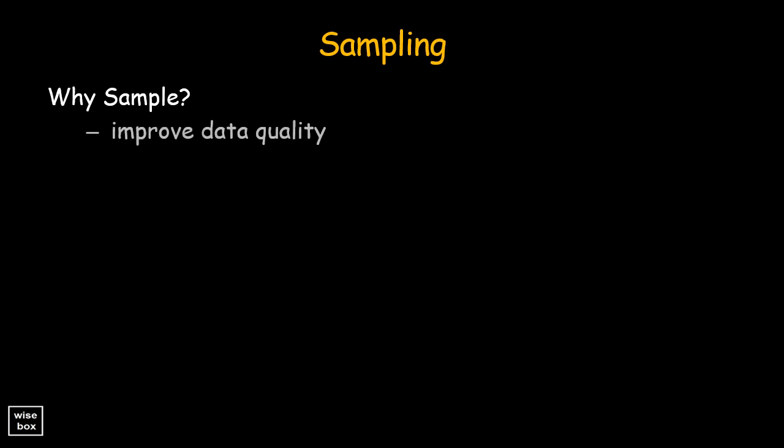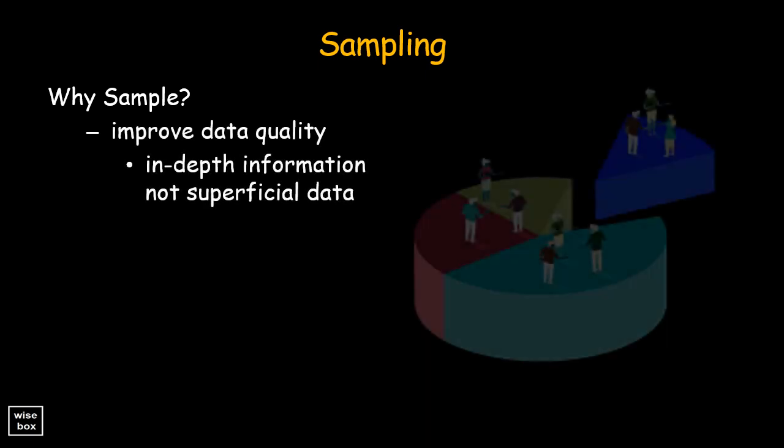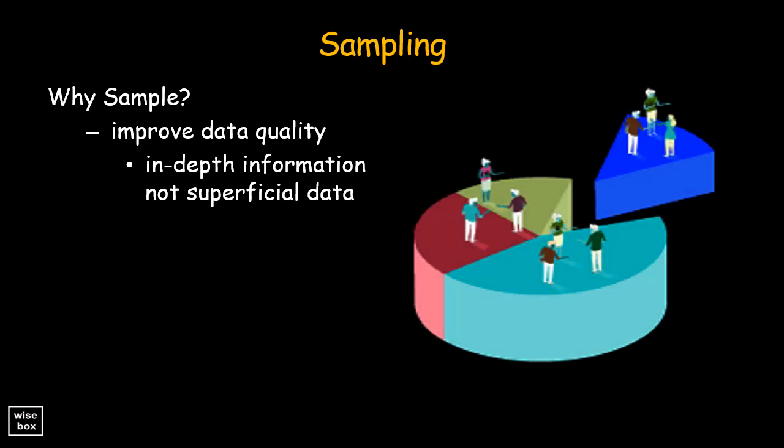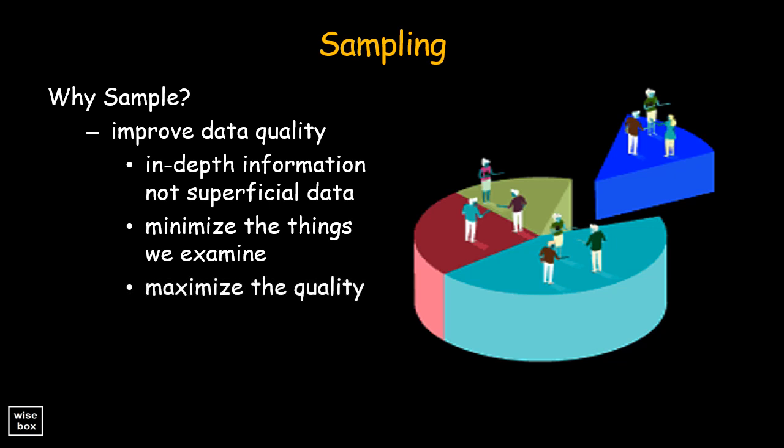Another reason for sampling is to obtain in-depth information about each subject rather than superficial data on all. We also want to minimize the number of things we examine or maximize the quality of our examination of those things we do examine.